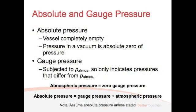Now, absolute and gauge pressure. There's two ways we can measure pressure. There's atmospheric, sorry, absolute pressure and gauge pressure. If you've got a container, it's completely empty, so there's a vacuum inside, the absolute pressure inside that container is zero.